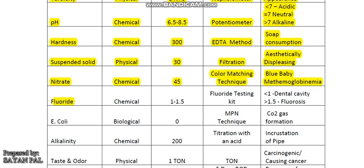Now fluoride. Fluoride is also a chemical water quality parameter and its limit is 1 to 1.5 mg per litre — the amount of fluoride in water should be effectively controlled. It is measured by fluoride testing kit. If fluoride is less than 1 mg per litre, it causes dental cavity. If greater than 1.5 mg per litre, it causes fluorosis. So the amount of fluoride in water should be controlled.